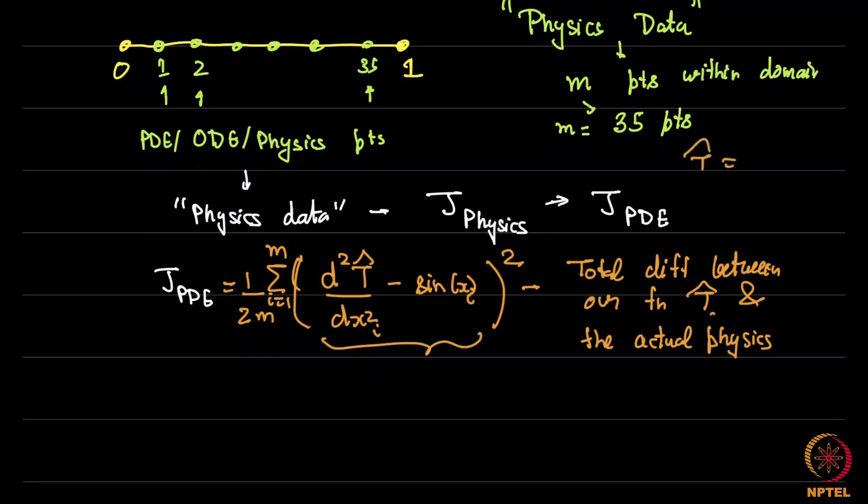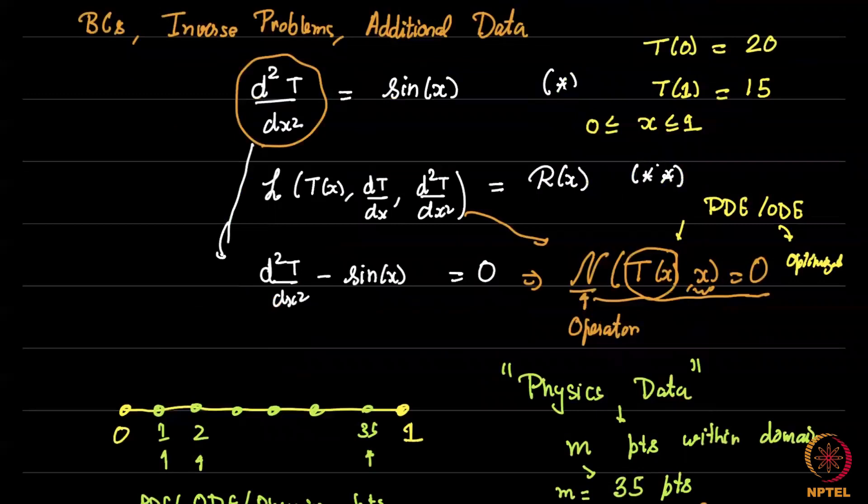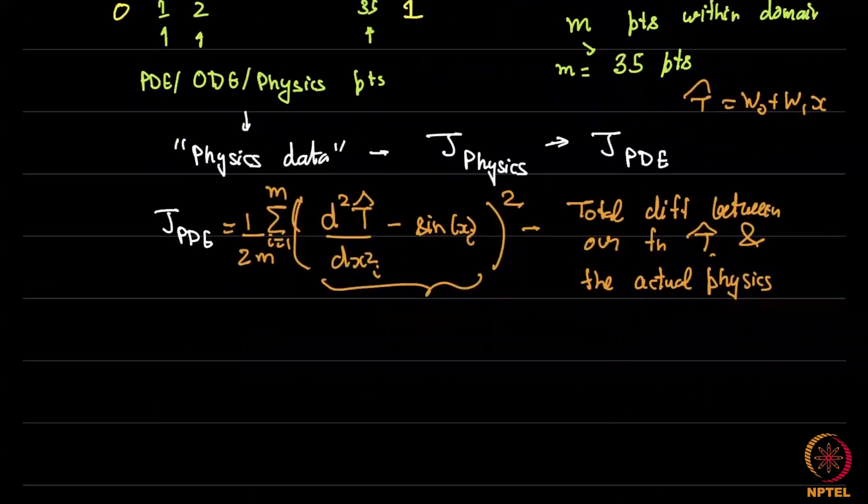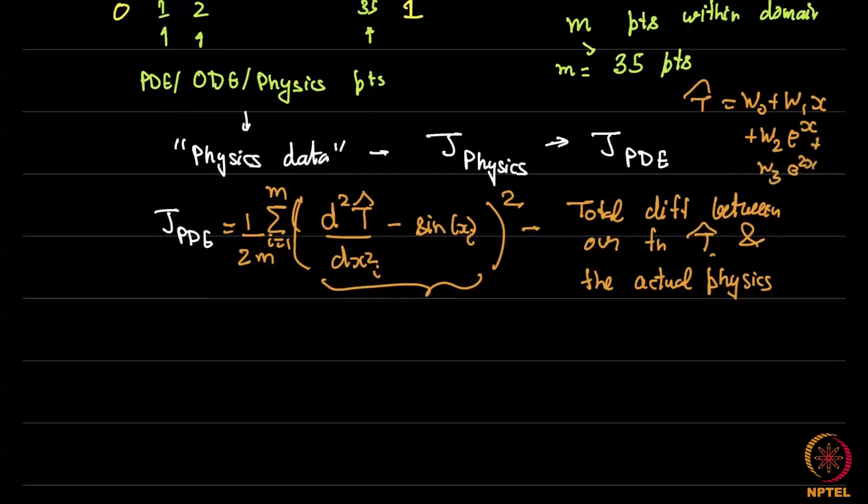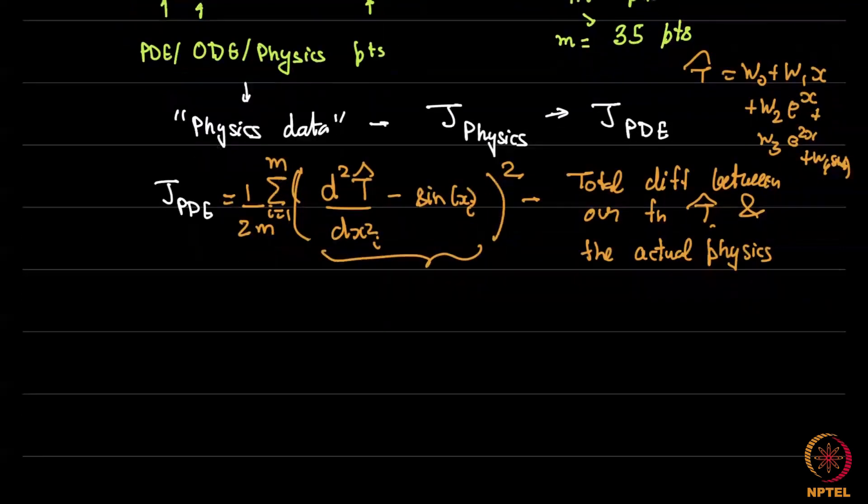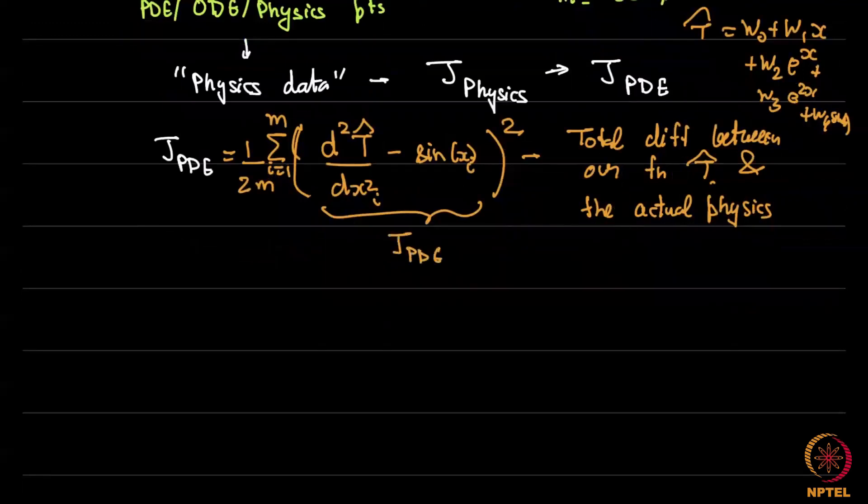So actual physics of the problem says this should be exactly 0 whereas our T̂ suppose I make up a function T̂ is some function of w₀ and w₁ let us say w₀ + w₁x. If I plug that in here then I will get d²/dx² equal to 0 because it is a linear function that will get 0 and that will not match this. So you want to say that okay w₀ + w₁x is not a great function. Now you might add something else let us say w₂e^x + w₃e^(2x) + w₄sin(2x) etc. So you might try add all these other hypothesis functions. We plug all of those in here and just compare what d²T/dx² does versus what it should do which is equal to sin(x).